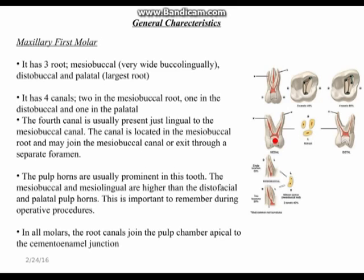The mesiobuccal and mesiolingual pulp horns are higher than the distofacial and palatal pulp horns, so take caution on the mesial side whether buccal or lingual when doing restorations. In all molars, the root canals join the pulp chamber at a level apical to the cementoenamel junction — this sometimes comes up on boards.